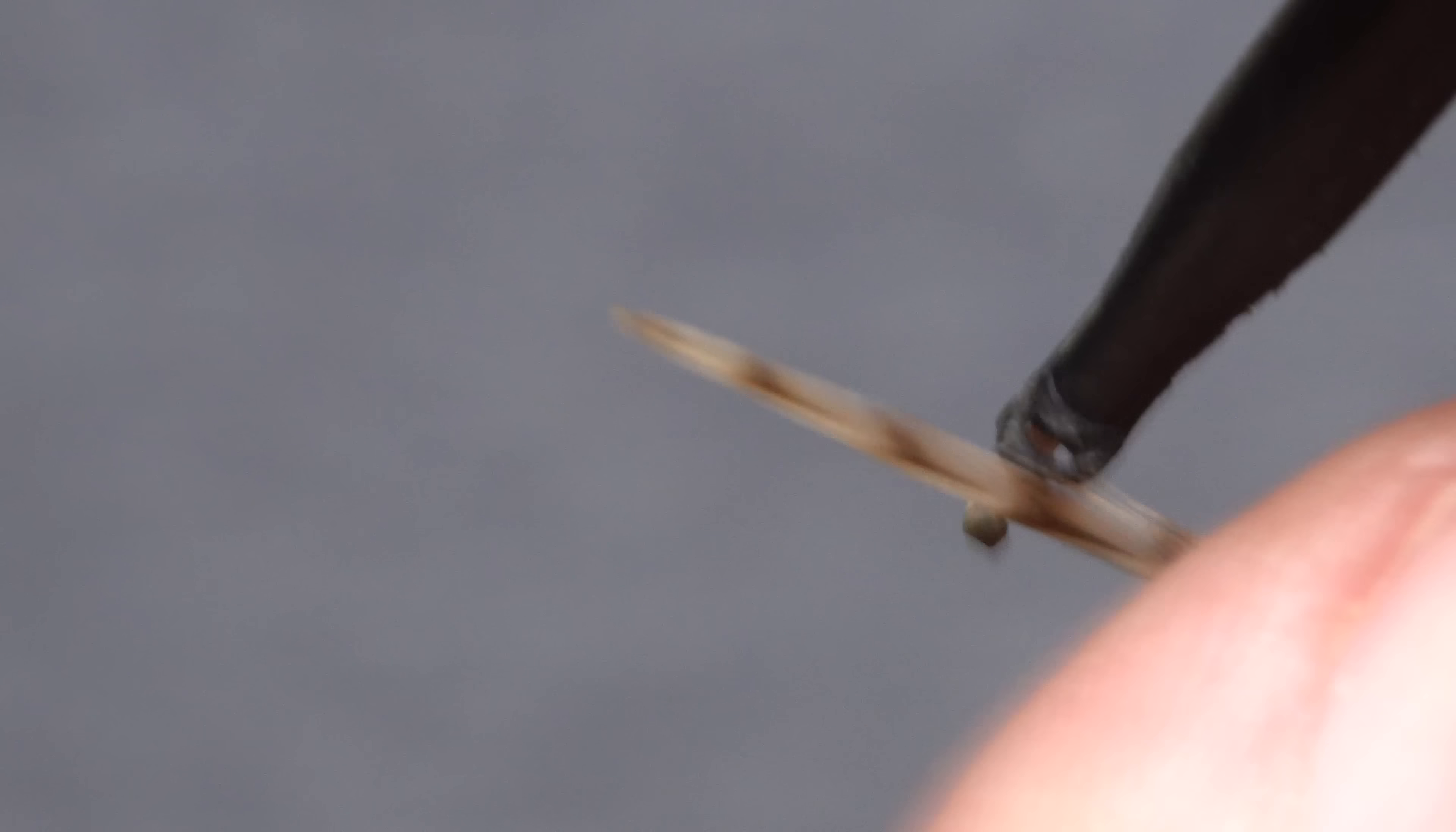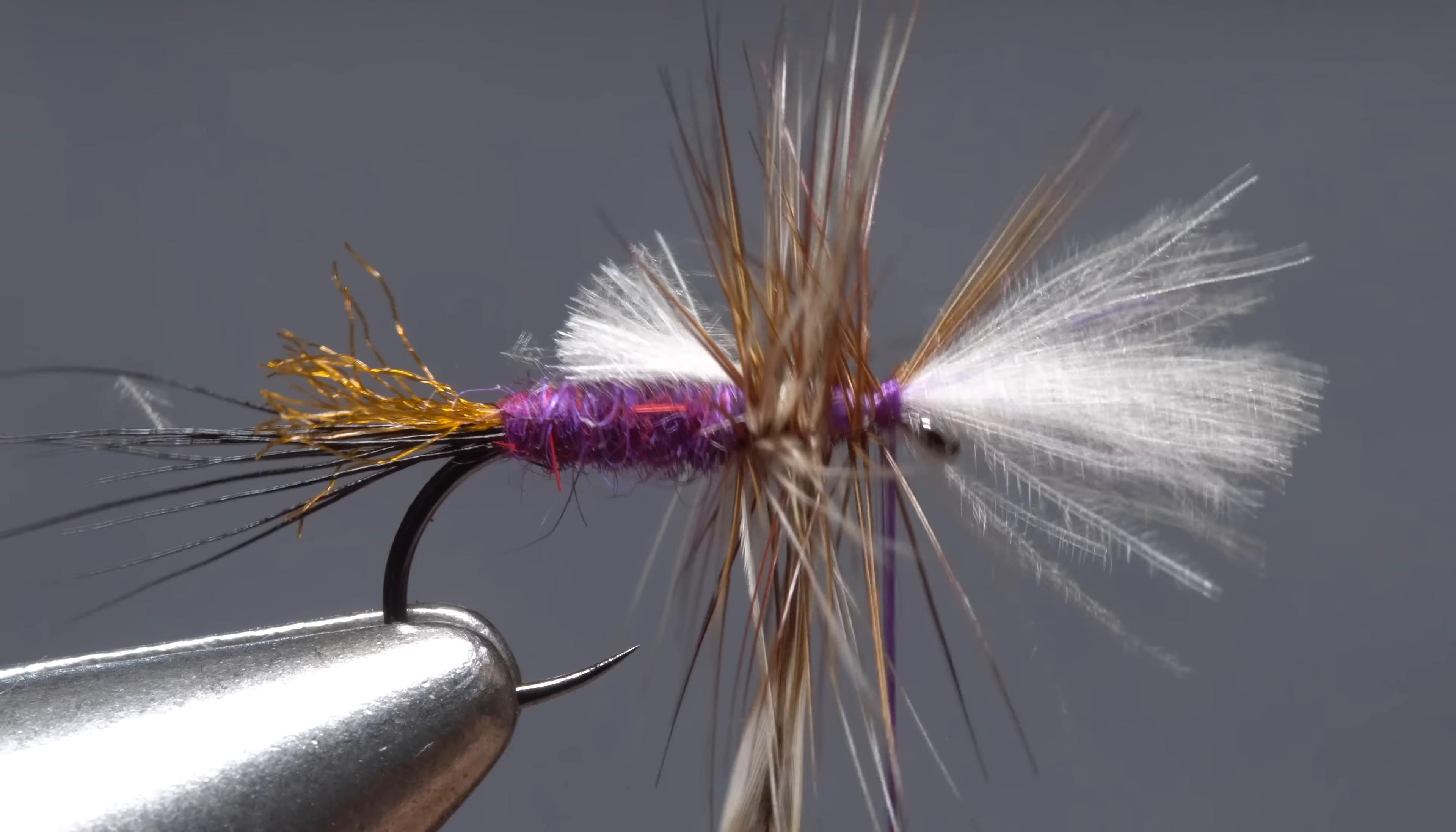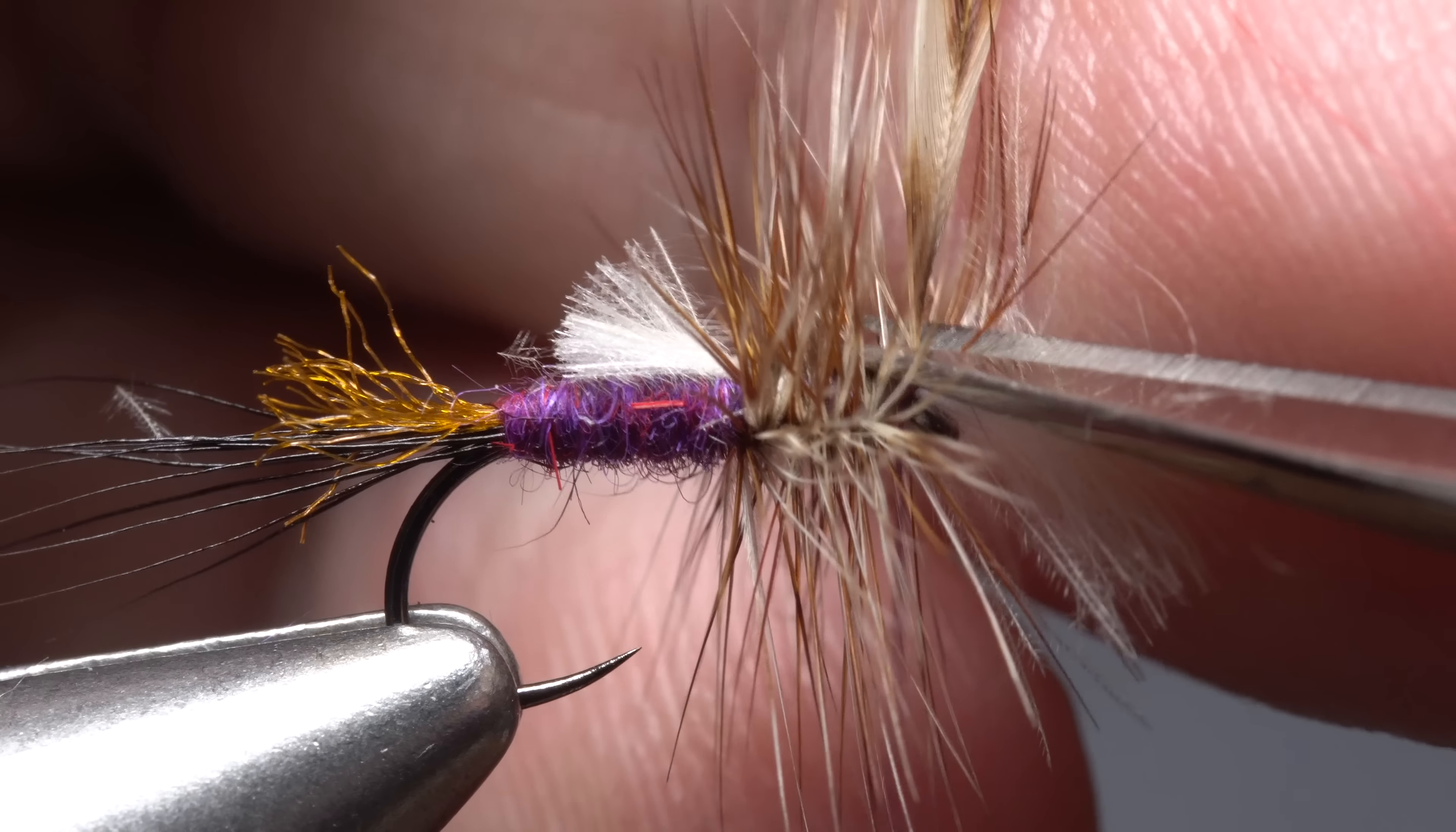Get hold of the second hackle feather by its tip and start taking wraps with it. This time wrap between the wraps of the previous hackle. Then once again when you reach your tying thread, use it to anchor the tip and snip the excess off close.